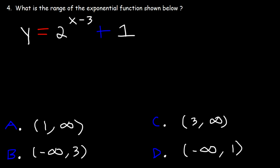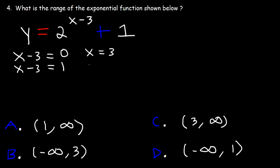Number four: what is the range of the exponential function shown below? We're going to go ahead and graph it. Let's take the exponent and set it equal to two things: zero and one. So if we solve for x, x is going to be three and four. We're going to make our table based on those values, three and four.